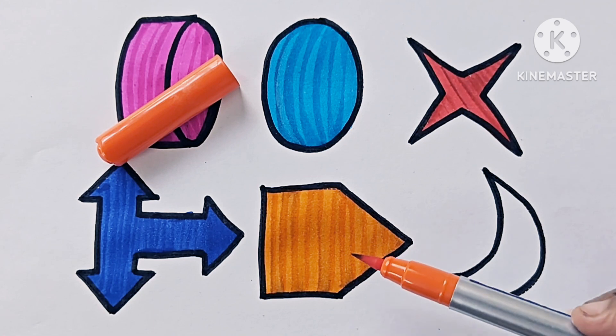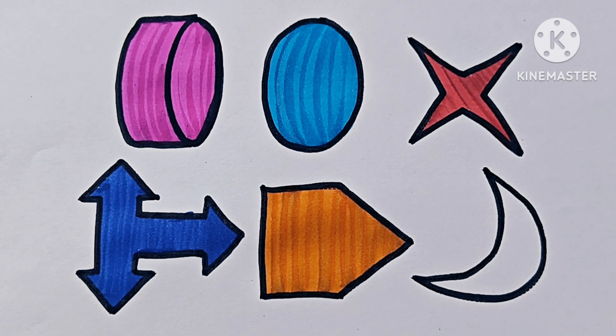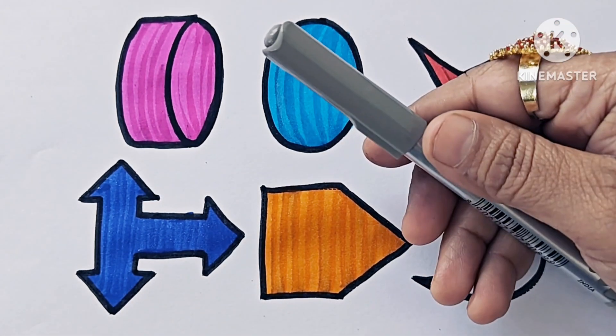This is a pentagon. This is a pentagon arrow. This is a shape. Gray color.